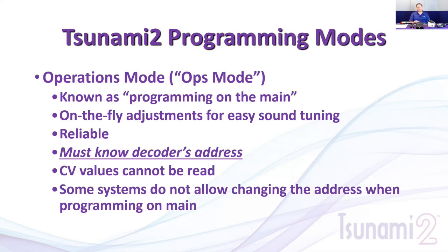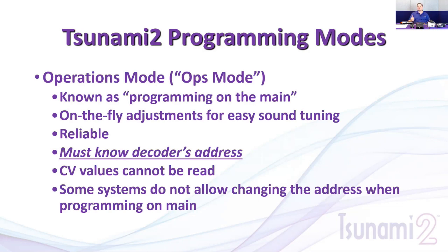You cannot read a CV value on the mainline. The way a decoder is read is not what you expect — the DCC system doesn't simply ask 'what's the value in CV29?' and get an answer. Instead, it plays a game of 256 questions: 'Is the value 0? Is it 255? Is it 1, 2, 3...?' When the decoder answers yes, it draws a surge of current the DCC system can detect. On the mainline, if another locomotive starts up, there's no way to determine where the current surge came from, so you'll get false reads.